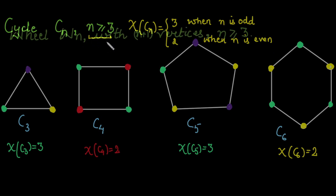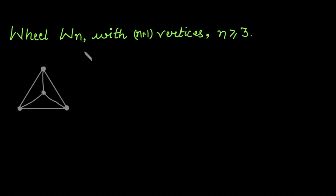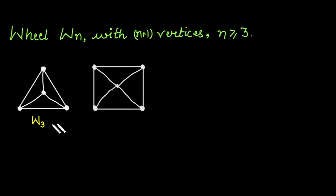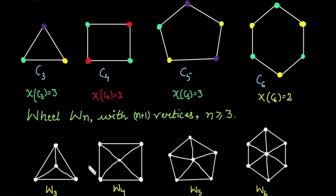Next we have the wheel graph Wn with n plus 1 vertices, where n is greater than or equal to 3. The minimum number of vertices in a wheel graph is 4 when n equals 3. The wheel graph is formed from a cycle by adding a central vertex connected to all vertices of the cycle. We will analyze the chromatic number for W3, W4, W5, and W6. For W3, the base is cycle C3 with three vertices forming a triangle.